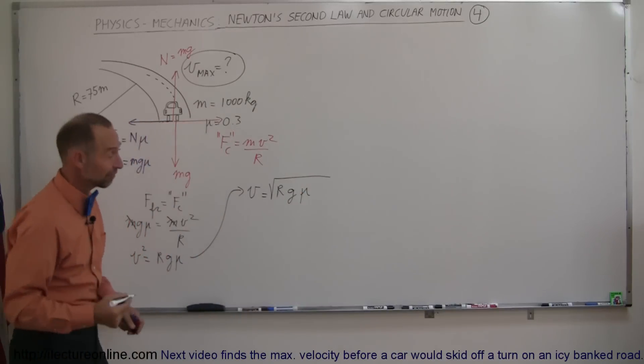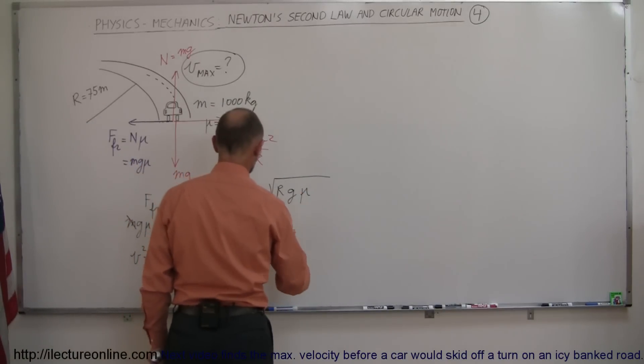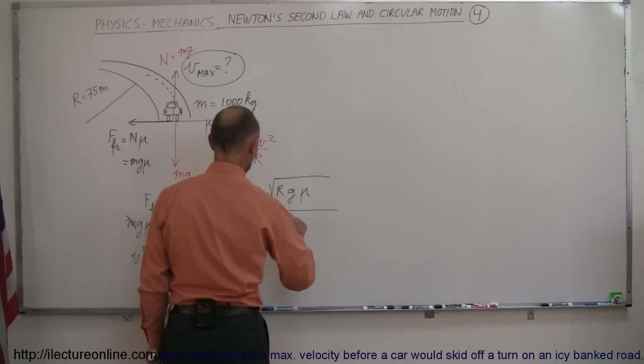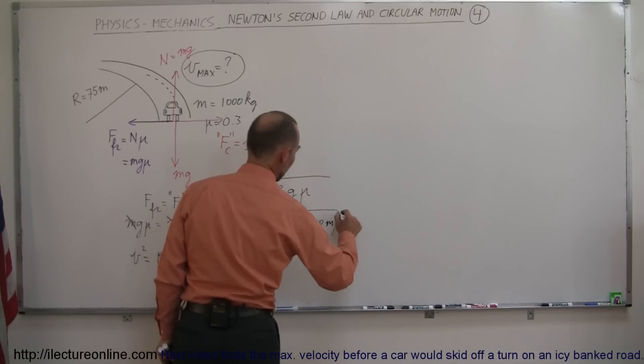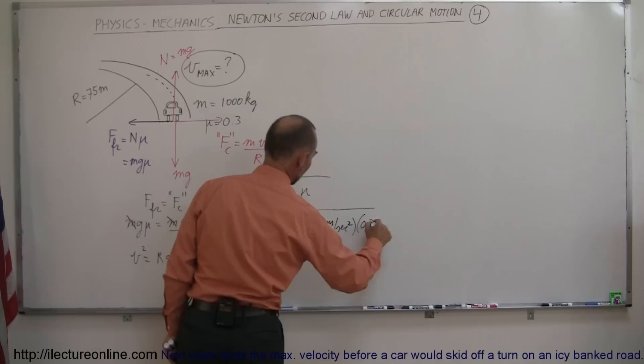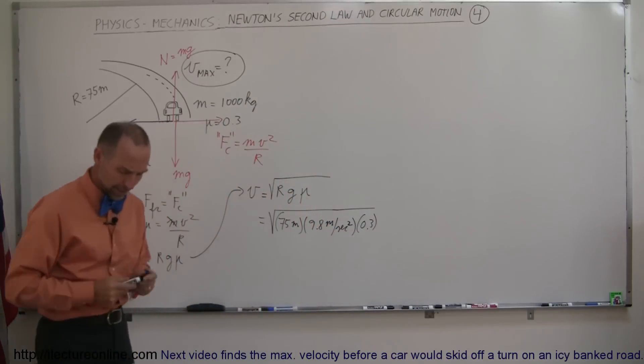All right, let's plug in the numbers and find out what that is. This is equal to the square root of the radius, which is 75 meters, the acceleration due to gravity, 9.8 meters per second squared, and mu, which was 0.3.